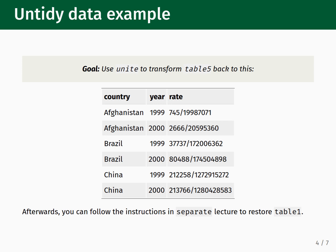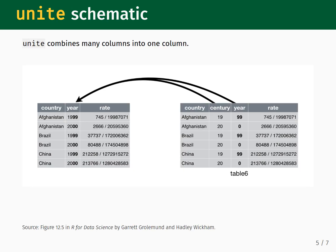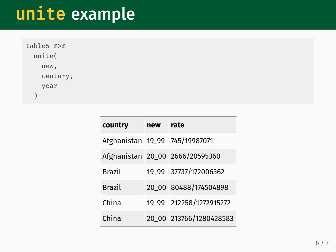This schematic illustrates how we will use the Unite function to reshape Table 5. Note that the Table 6 label on the bottom right is a typo from the figure in the R for Data Science textbook. What we are doing here is taking the Century and Year columns and combining them into a new column named Year. This is an operation that preserves all relationships in the data.